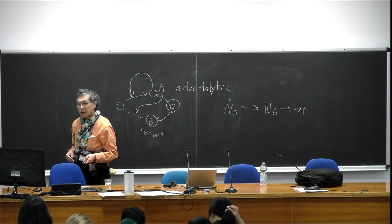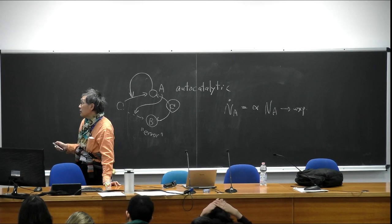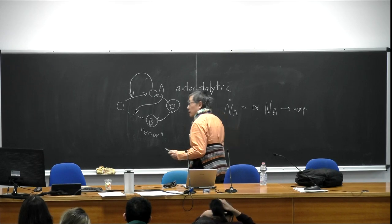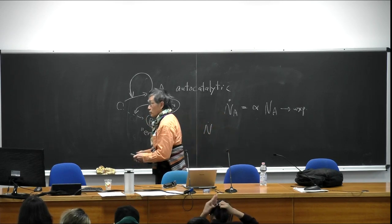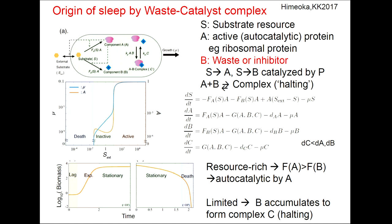We consider another different molecule species that is some kind of error from the original, which does not have the function to catalyze others. If this molecule is larger, growth is suppressed. If you have a complex between A and B, and if the nutrient is lower, this fraction increases, and it goes to a sleeping state. The growth rate mu goes down drastically to something like 10^-9, almost zero, so the cell cannot grow.